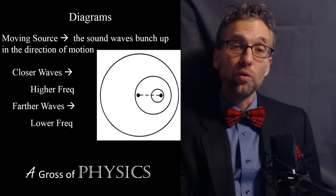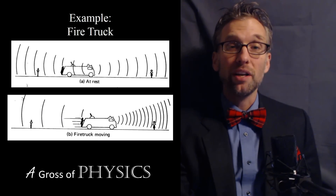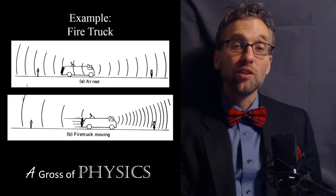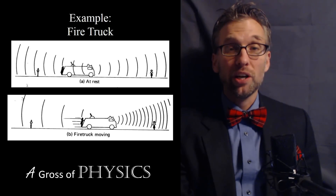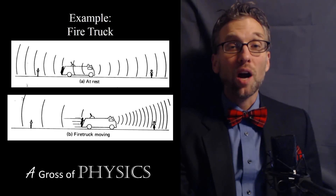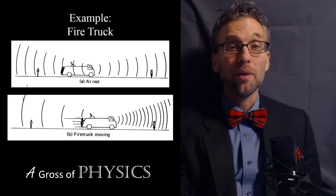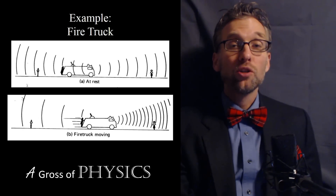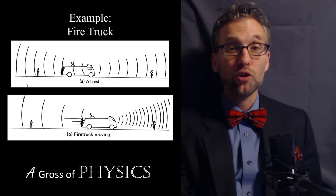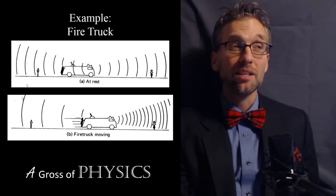In the fire truck example, when everyone is standing still, all the wave patterns are equally distributed throughout the diagram. When the truck is moving, the wave forms are bunched up on the right and spread out on the left — the person on the right hears a higher pitch, the person on the left hears a lower pitch. The firefighter on the fire engine itself would hear a constant frequency the whole time because they're moving with the sound wave, just like a driver hitting their horn hears a single constant note.